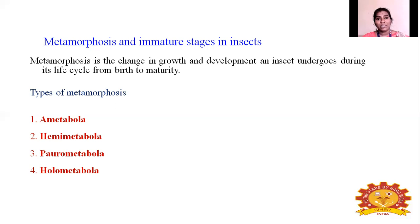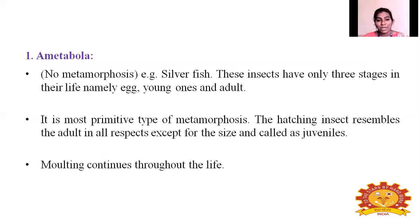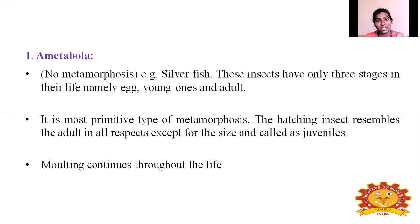One by one, I will tell first about Ametabola. Ametabola has another name — it is 'No metamorphosis.' It is the most primitive type of metamorphosis. Because here these insects have only three stages in their life: egg stage, young one stage, and adult stage. The egg stage is common for all insects. After the egg stage, for example, take silverfish.